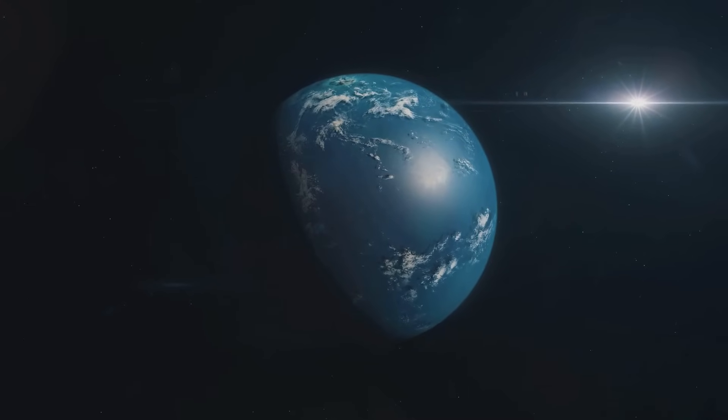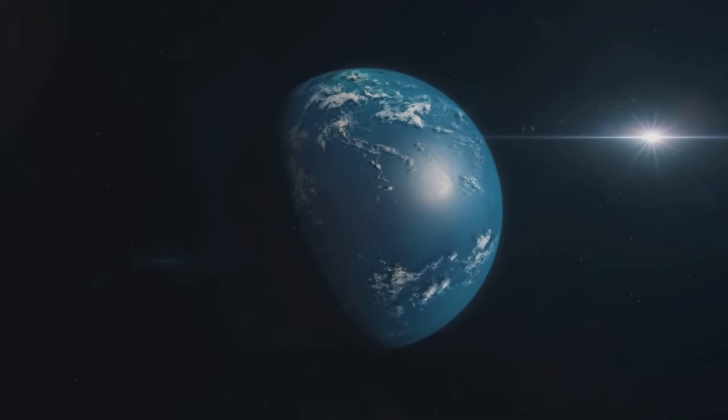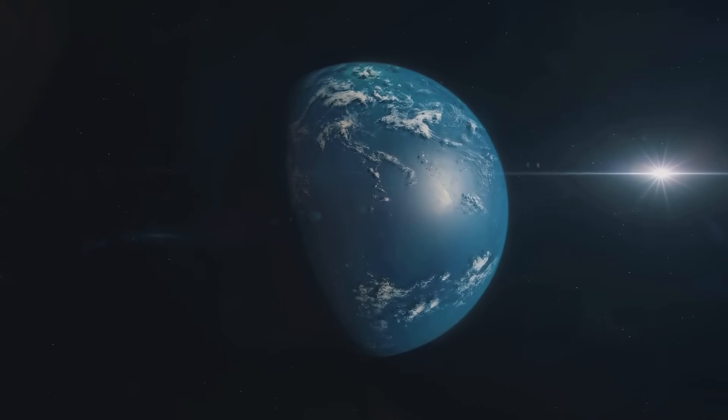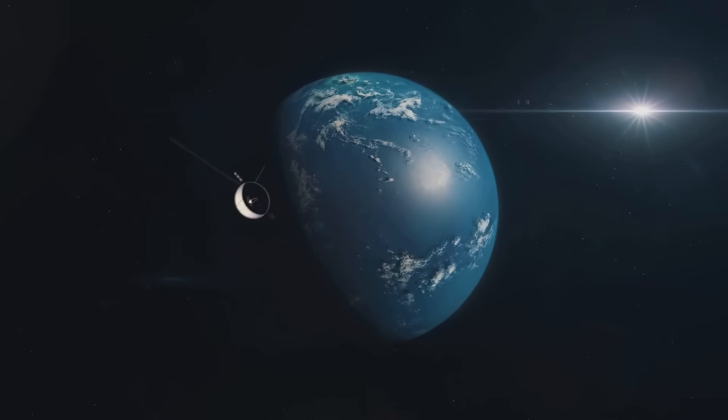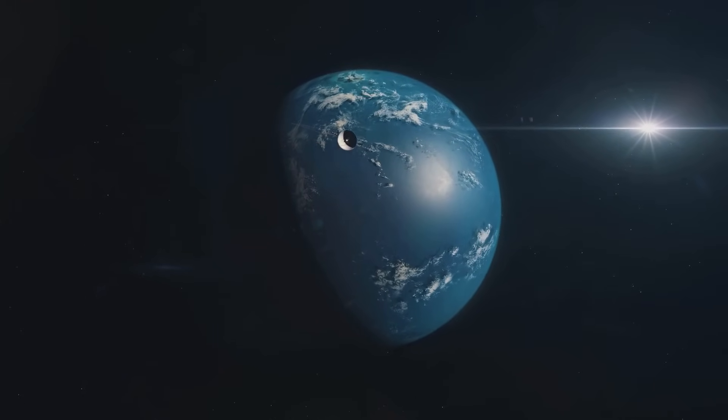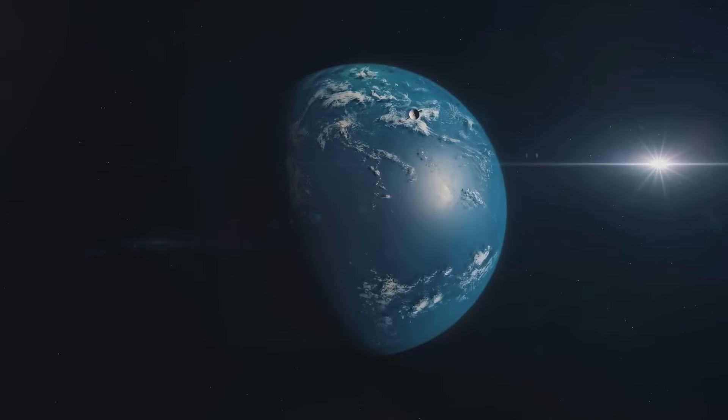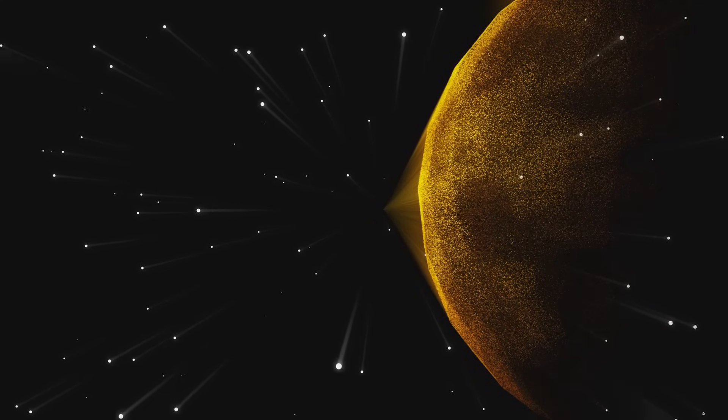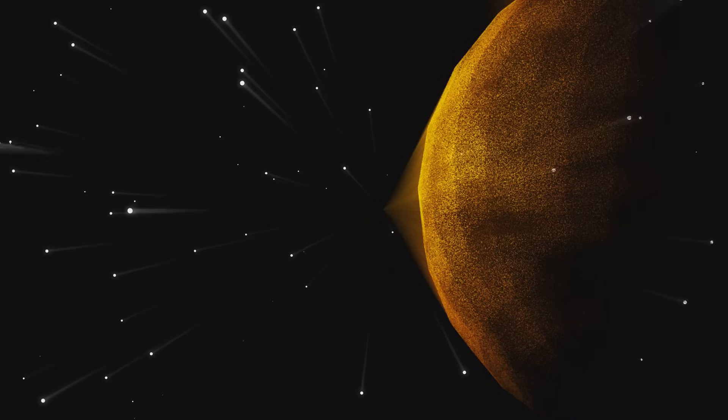But what does it mean for a planet to be habitable? In the simplest of terms, a habitable planet is one that can support life as we know it. It must be at just the right distance from its star, not too hot and not too cold, to allow for the existence of liquid water. It must have a suitable atmosphere and the right chemical ingredients necessary for life.